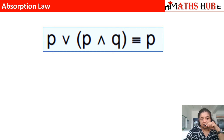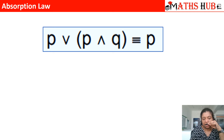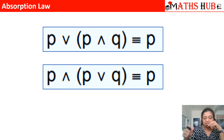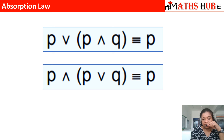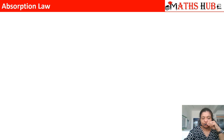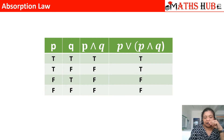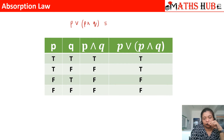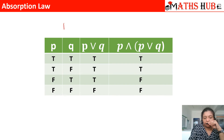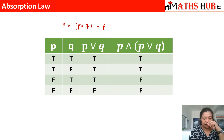The next law is the absorption law. It says P OR (P AND Q) is equivalent to P — the term P AND Q gets absorbed and we get P. The second sub-law says P AND (P OR Q) is equivalent to P — here P OR Q gets absorbed and we get P. Checking with truth tables, the columns of P and P OR (P AND Q) are exactly the same, and similarly for P AND (P OR Q).